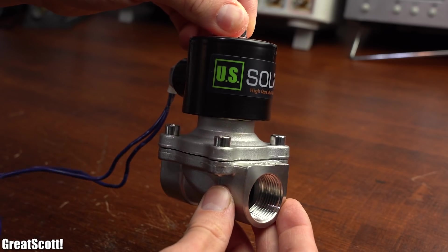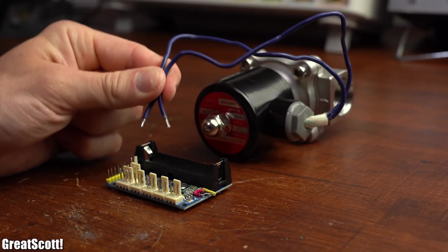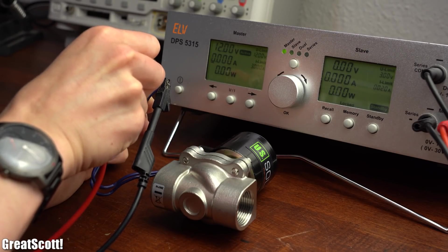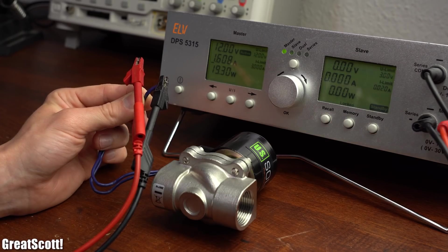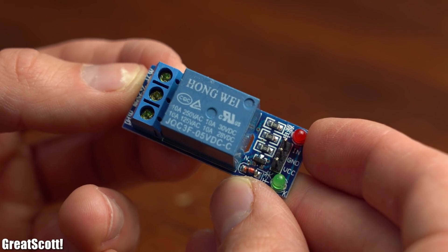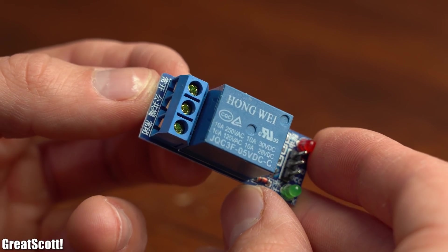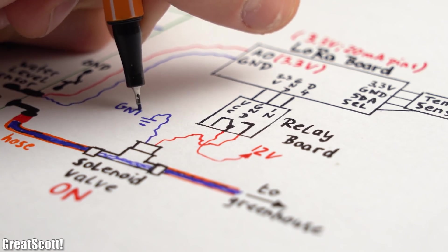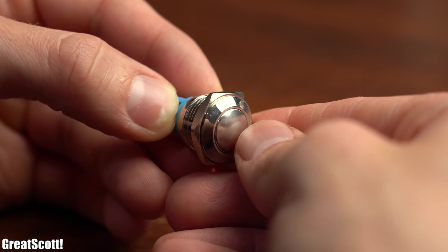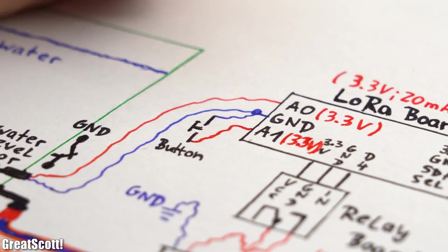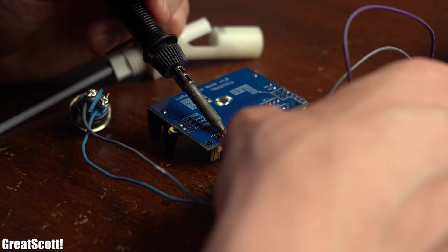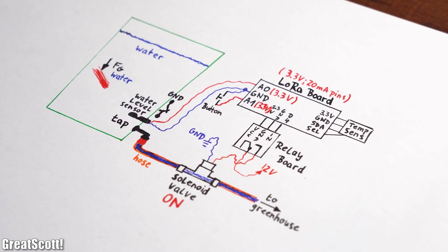Now directly connecting this valve to the LoRa board however was not possible because the solenoid requires 12V at 1.6A to activate which the LoRa board cannot offer. So I had to use such a simple relay board which I connected to pin D4 and the solenoid valve like this. Last but not least I added a push button for manual activation to pin A1 and built up the electronics system for some testing on my workbench according to this finalized schematic.